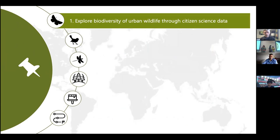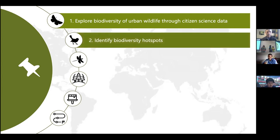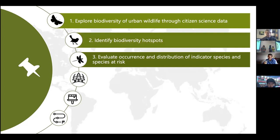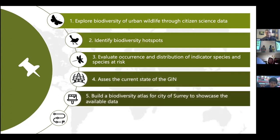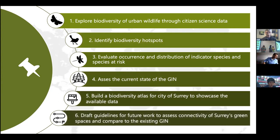We have six main aims to achieve this. First, we'd like to explore the biodiversity of the city using citizen science data. We want to evaluate the occurrence and distribution of indicator species and species at risk. We also want to assess the current state of the GIN, build a biodiversity atlas for the city of Surrey using available occurrence data, compile this data to draft guidelines for a connectivity analysis, and compare that connectivity to the existing GIN.